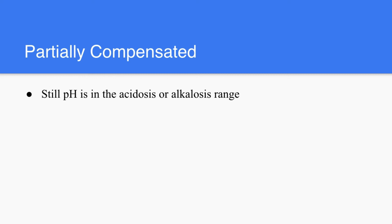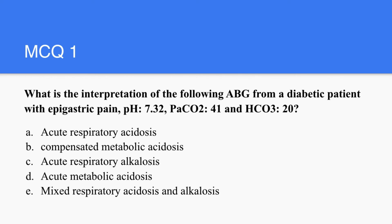So in partially compensated, the pH is still either acidic or alkalotic. Now let us look at some MCQs. It's very important to look at the clinical scenario and make up your mind before even looking at the figures. In this one: what is the interpretation of the arterial blood gases from a diabetic patient with epigastric pain? We know that any diabetic patient with epigastric pain, we have to rule out diabetic ketoacidosis. So we are going to look for a low pH and low bicarb. The pH is 7.32, the PaCO2 is 41 — that's normal — and the bicarb is on the lower side. So this is uncompensated metabolic acidosis.